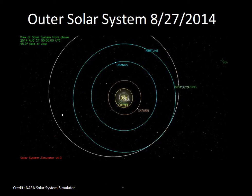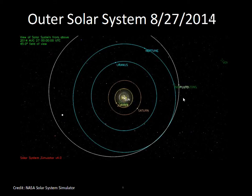In terms of the outer solar system, Jupiter is about five astronomical units away from the Sun — five times farther than the Earth. Saturn is about nine astronomical units from the Sun. And Pluto, on average, is about 40 astronomical units away from the Sun — 40 times farther than the Earth. So the astronomical unit is a convenient ruler in the solar system, with one astronomical unit being the distance between the Sun and the Earth.